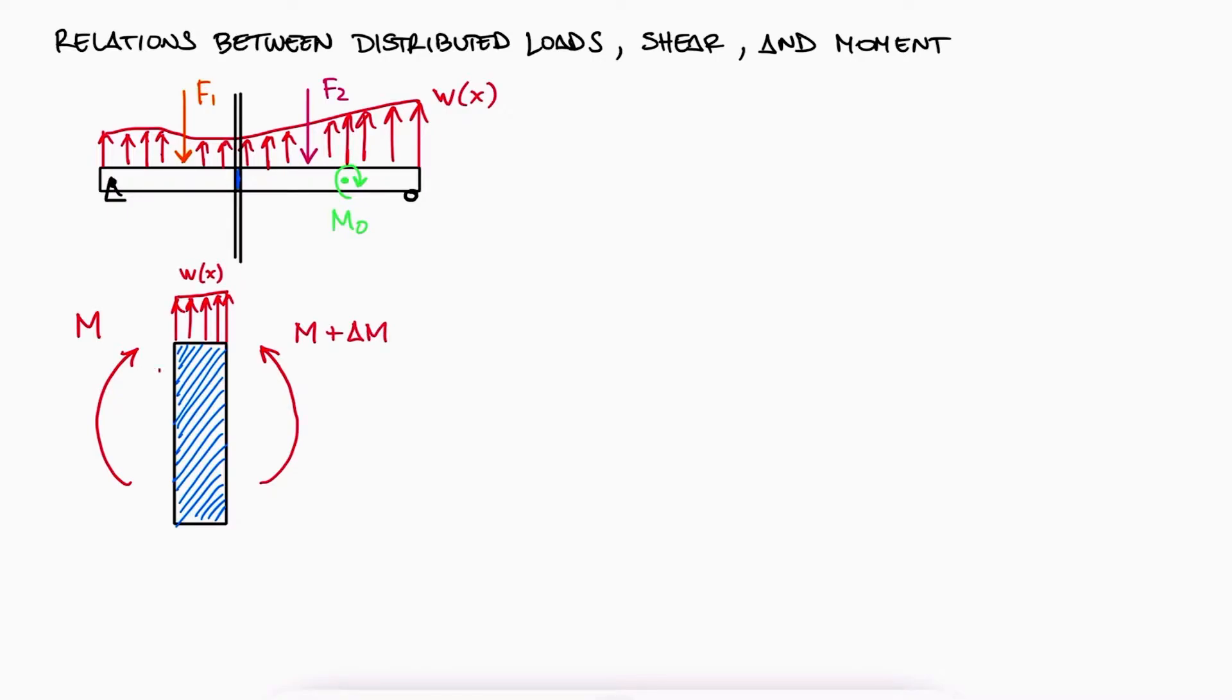The same would be true for V, with V going up on the left and V plus delta V going down on the right.